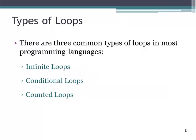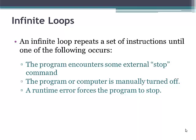There are three common types of loops available in most programming languages: infinite loops, conditional loops, and counted loops. Infinite loops are loops that repeat a set of instructions until one of the following occurs: the program encounters some external stop command, the program or the computer is manually turned off, or a runtime error occurs to stop the program.